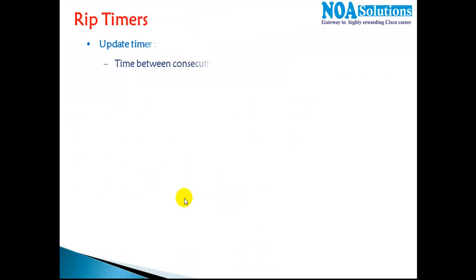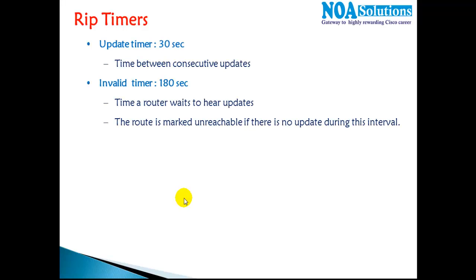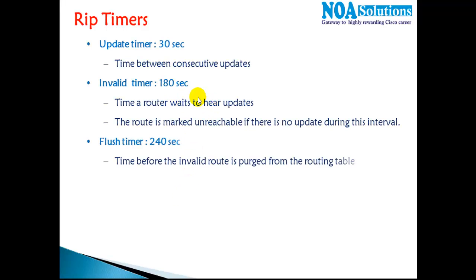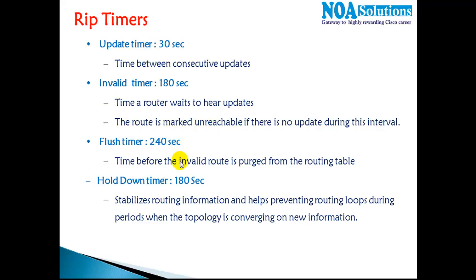To summarize the timers: the Update Timer is the interval between consecutive updates. The Invalid Timer is how long the router waits for updates before marking a route as unreachable. The Flush Timer is the time before the invalid route is removed from the table. The Hold-on Timer stabilizes routing information and helps prevent routing loops.